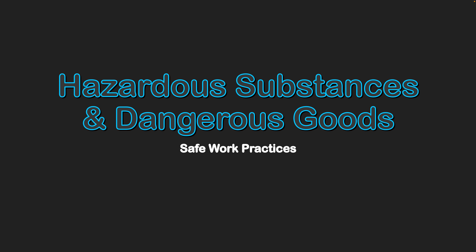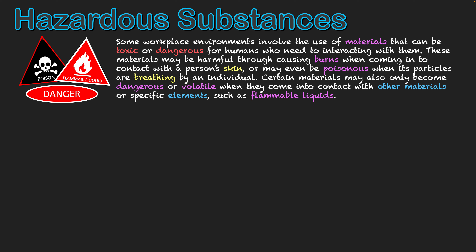Safe work practices: hazardous substances and dangerous goods. Some working environments involve the use of materials that can be toxic or dangerous for humans who need to be interacting with them. These materials may be harmful through causing burns when coming into contact with the person's skin, or may be poisonous when the particles are breathed in. Certain materials may also only become dangerous or volatile when they come in contact with specific other materials, such as flammable liquids — if that comes in contact with fire, then we've got our danger.